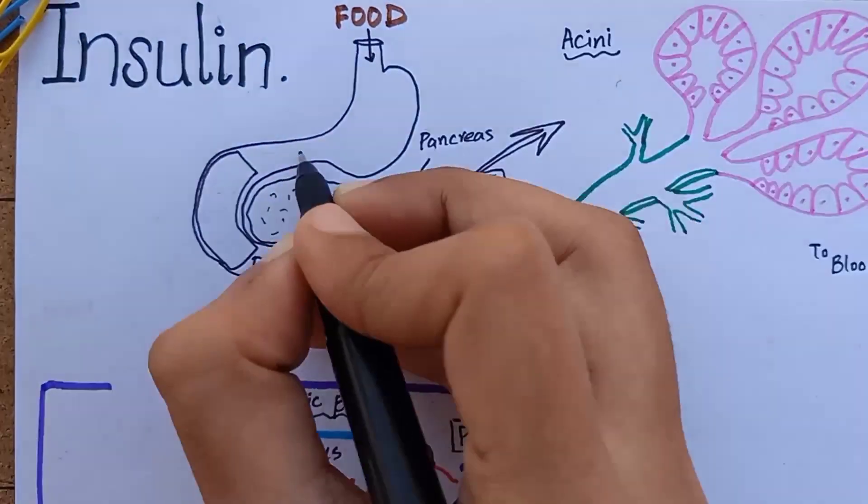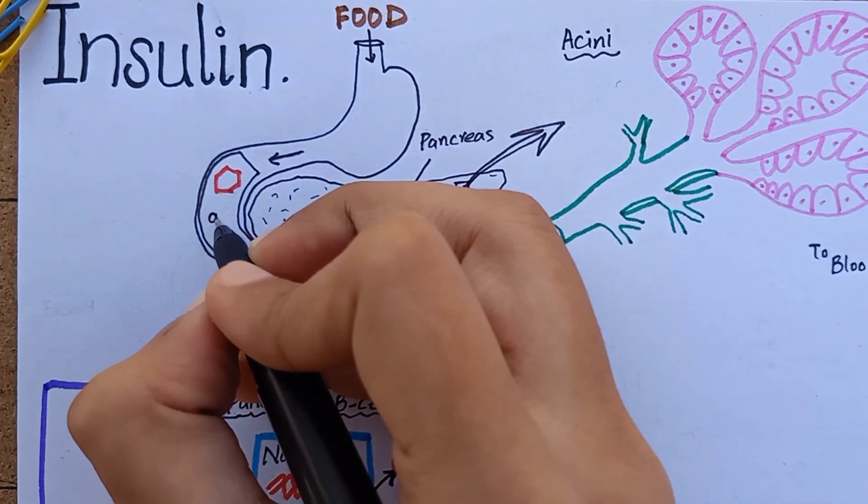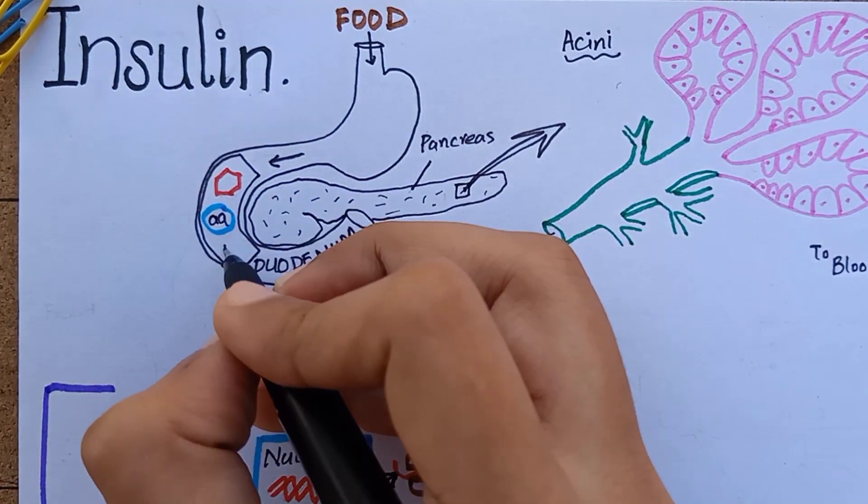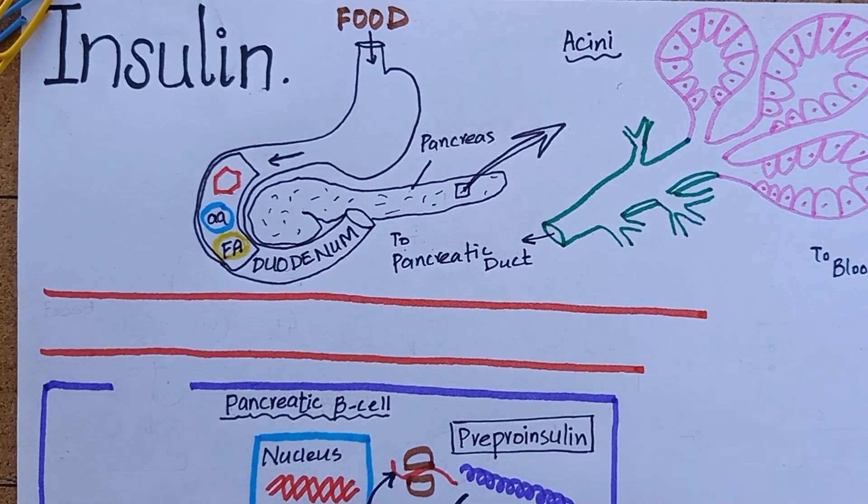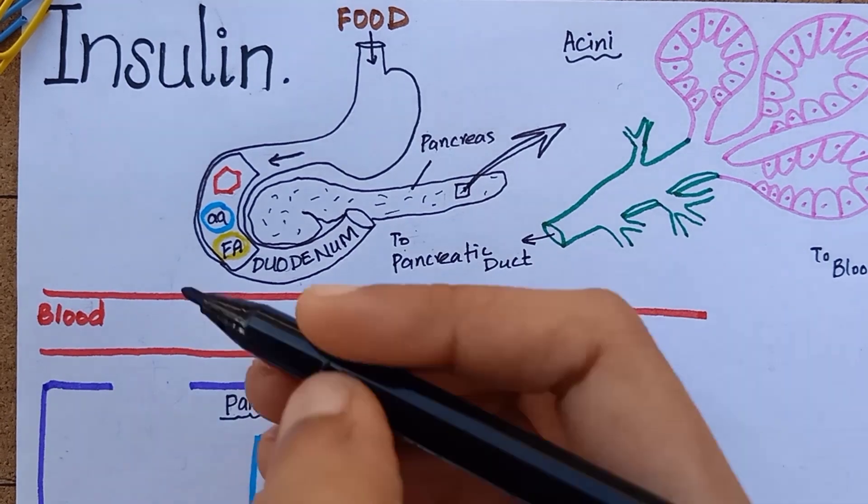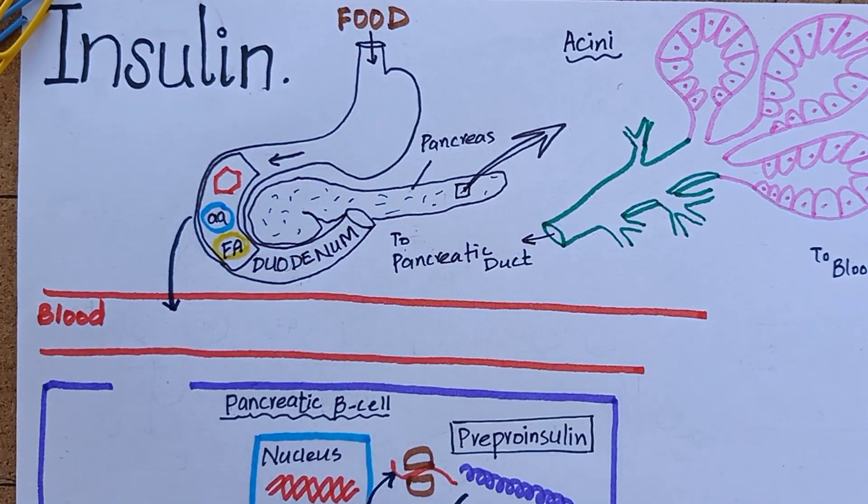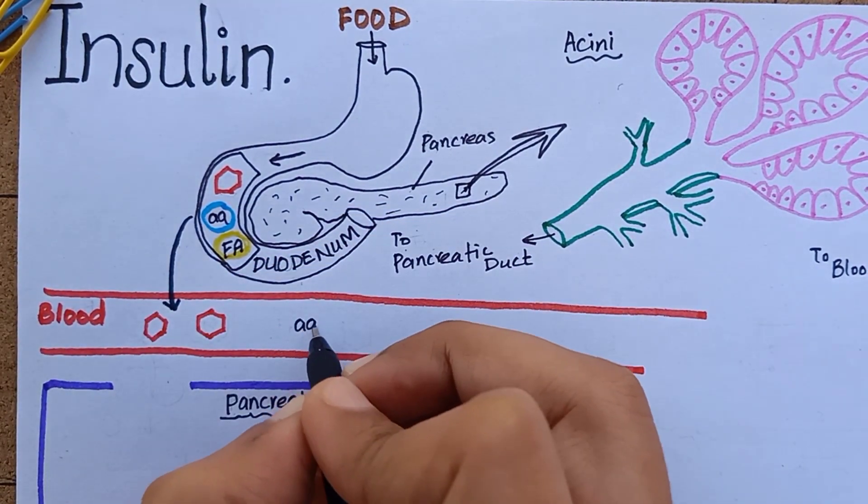Insulin has major effect during the fed state because after we eat there are many macromolecules running through our intestines such as glucose, amino acids, and fatty acids. From intestines, these macromolecules are absorbed into the blood.